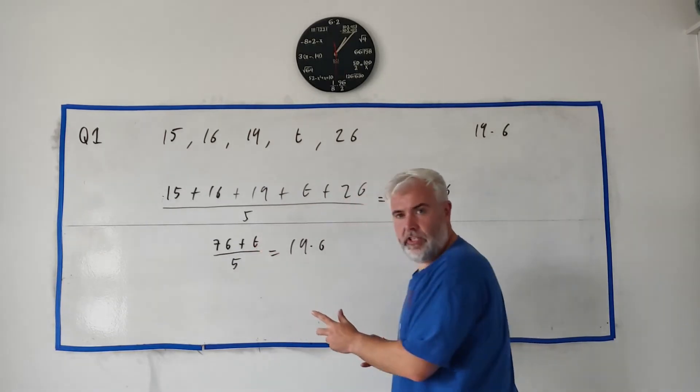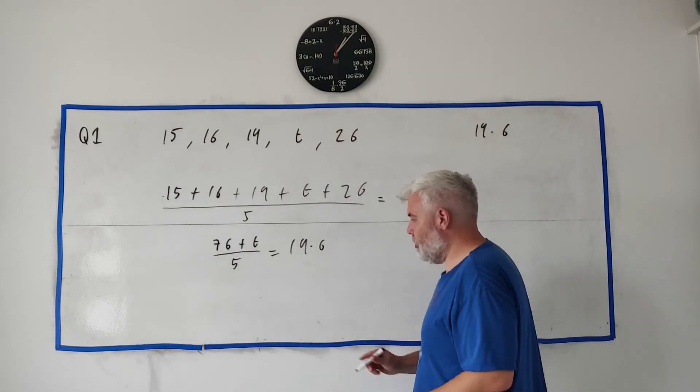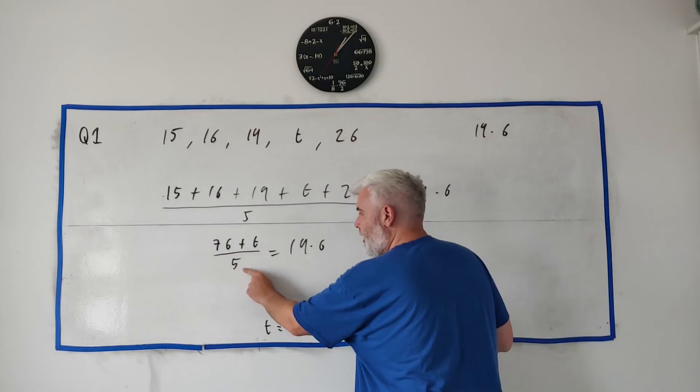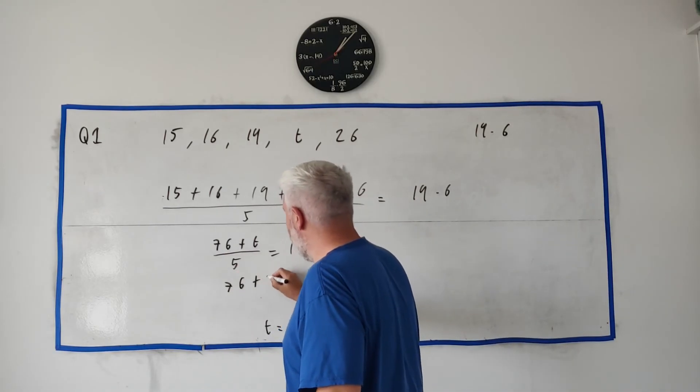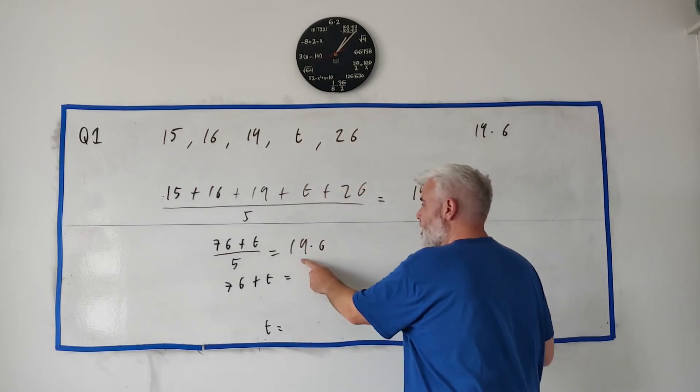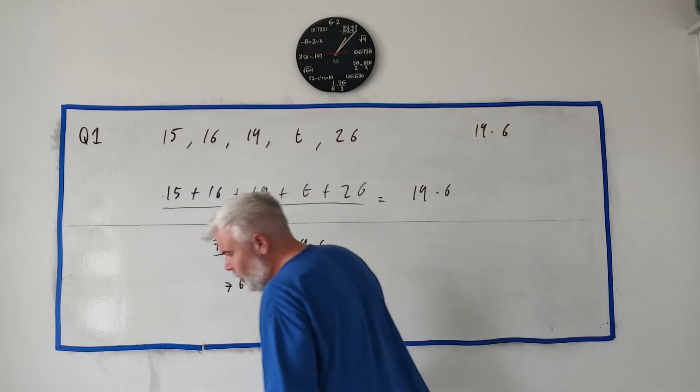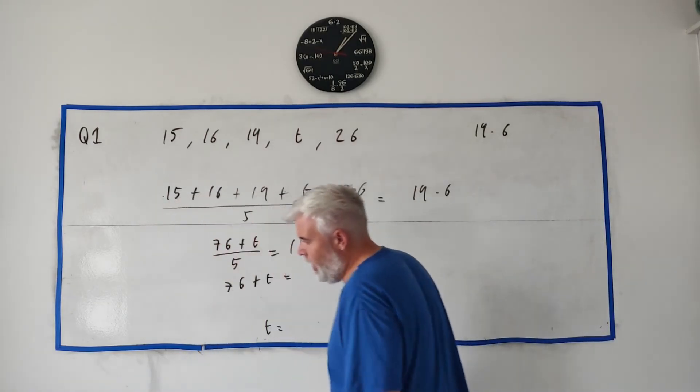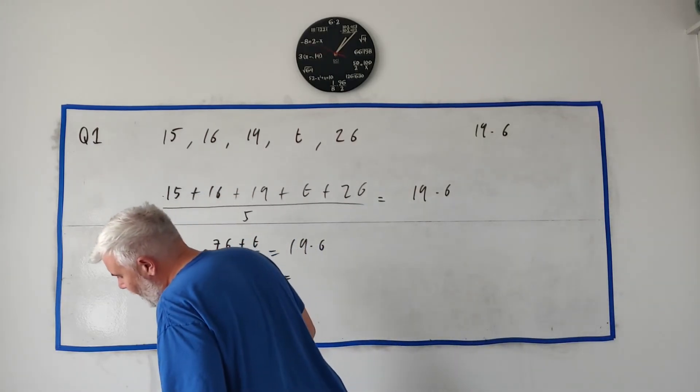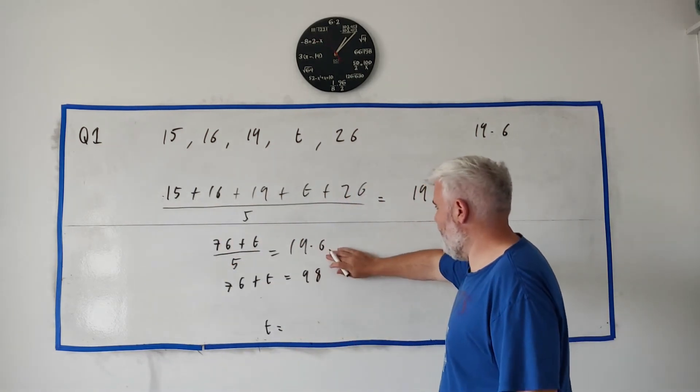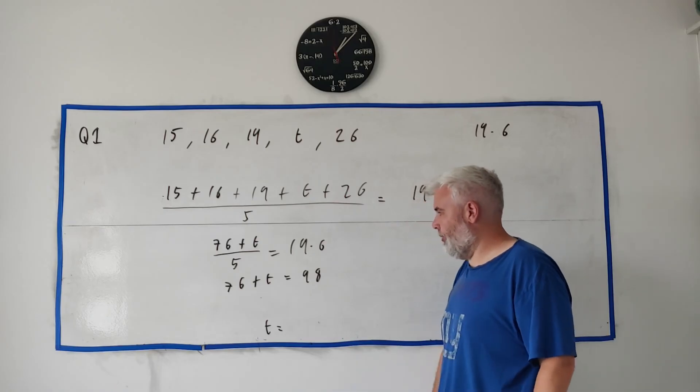Now again, we just solve for T. Let's move everything around so we're left with T equals at the end. So let's get rid of this five. Multiply both sides by five. On the left side we just get 76 plus T. And on the right side we get 19.6 multiplied by five. Put that into a calculator and you get 98. Is that right? Multiply that by five. Yeah, that looks good to me.